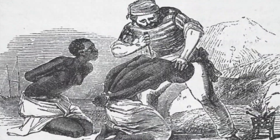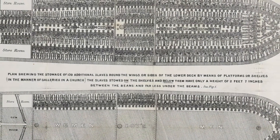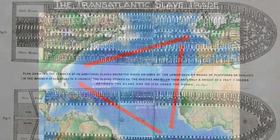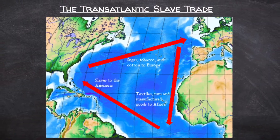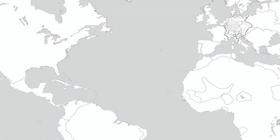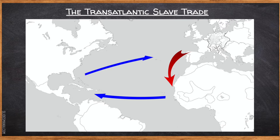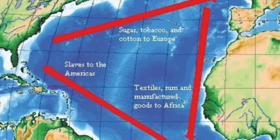Throughout the course of the slave trade, approximately 12.5 million Africans were taken from the coast of Africa to the Americas. African slaves soon became part of a complex global trading system called the Atlantic Trading System, or the Triangle Trade. One version of the Triangle Trade involved transportation of European manufactured goods, such as firearms, to West Africa. From there, enslaved Africans were shipped across the Atlantic to the Americas. The final leg involved the transportation of American tobacco, cotton, and other cash crops back to Europe.